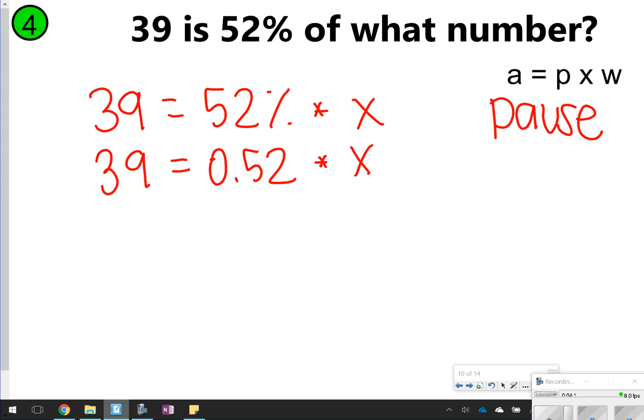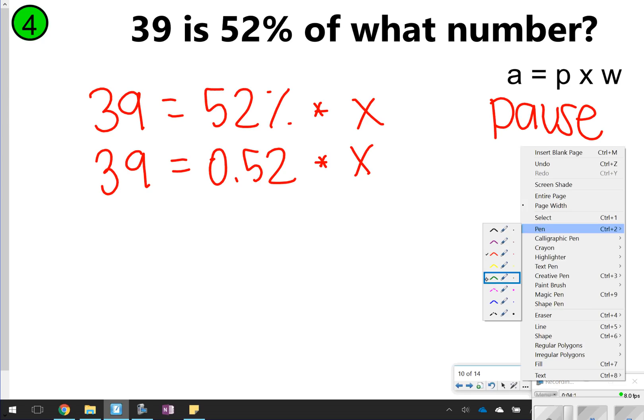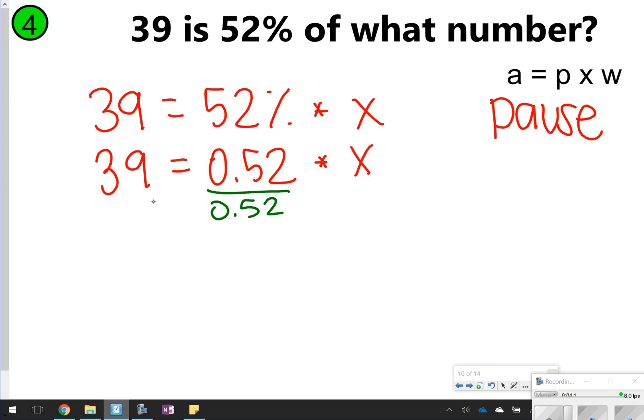It looks like 0.52 is being multiplied by x, so what we'll need to do to solve here is to divide both sides by 0.52 to get x all by itself. So we're basically doing 39 divided by 0.52, and that gives us 75, and 75 is our answer because we're not solving for percent. We don't need to move any decimals. How did you do on number four?